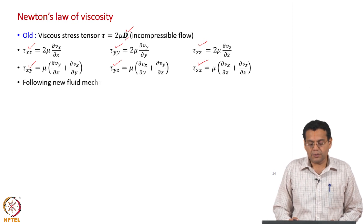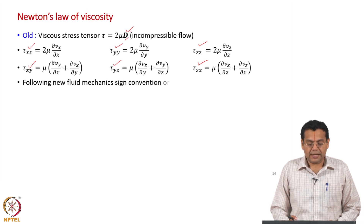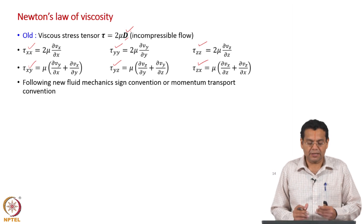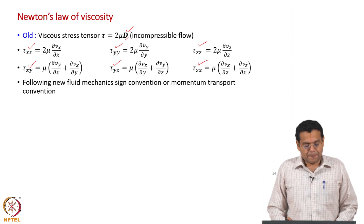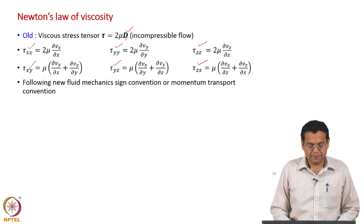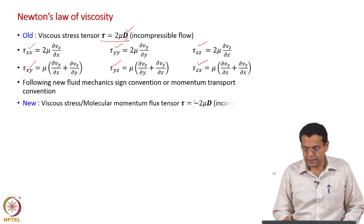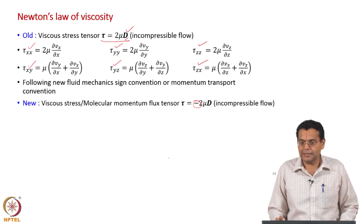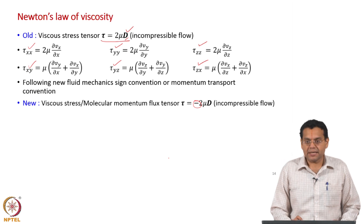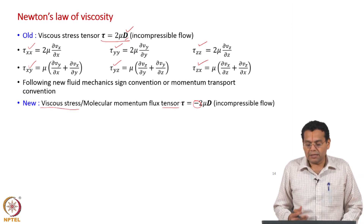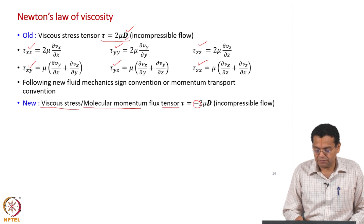Now we will rewrite Newton's law of viscosity following the new convention — the new fluid mechanics sign convention or momentum transport convention. We have already reconciled both of them. The same equation but with a negative sign: tau equals minus 2 mu d. If you are using the new fluid mechanics sign convention, tau is the viscous stress tensor. If you are using the momentum transport convention, tau is interpreted as the molecular momentum flux tensor.